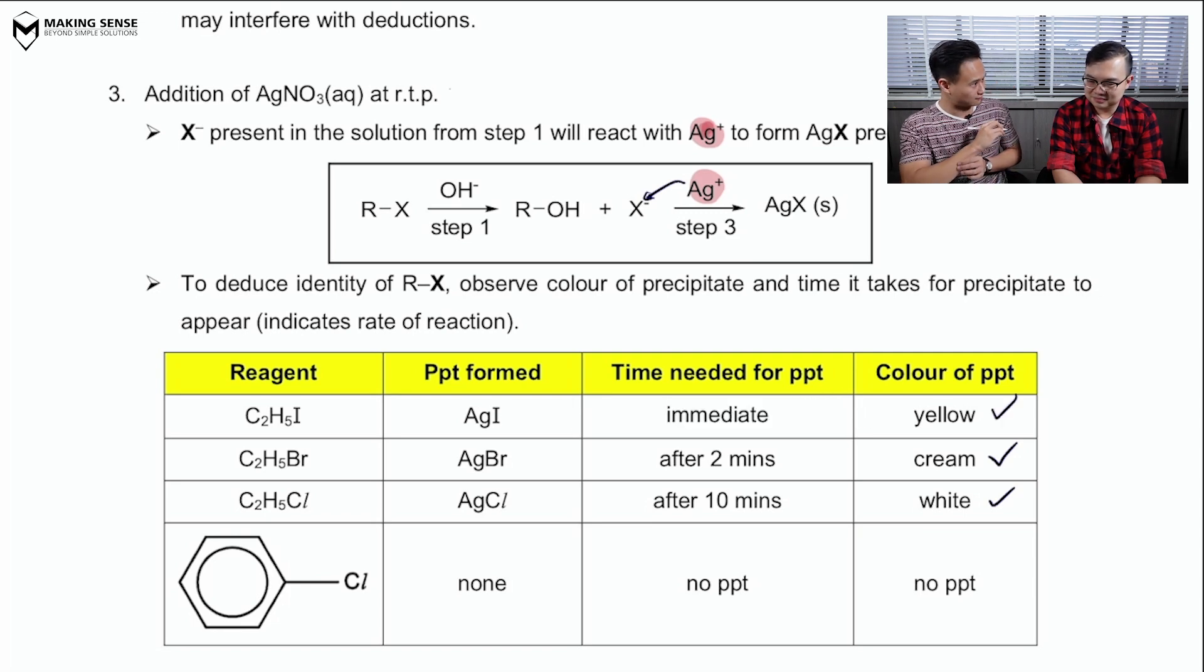But do you think we see a PPT for halogenyl arenes, Mr. Leong? Unfortunately, no. I believe it's because they don't undergo nucleophilic substitution, as you explained earlier. Exactly. So, no halides released. Yes.